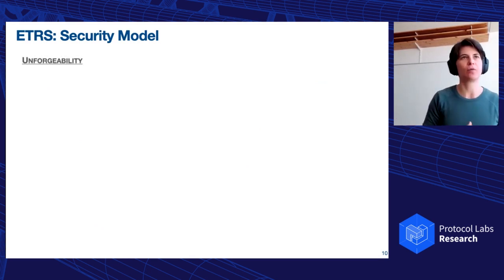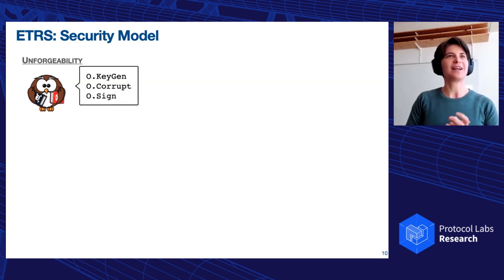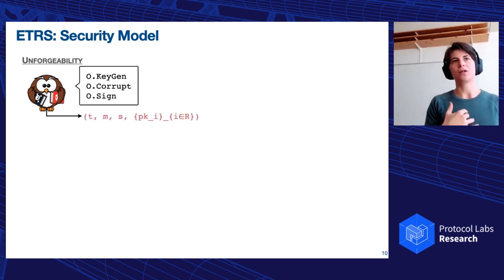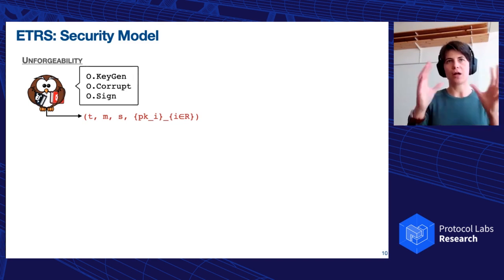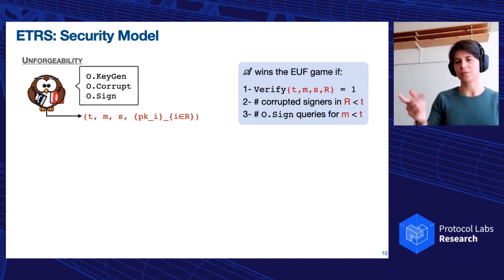So the security model. Before anonymity, we need to have unforgeability for a digital signature. This is not surprising as a notion. Our adversary here as an owl with bad hacking tools in their hand. They can interact with a key generation oracle, they can corrupt keys, and they can interact with a signing oracle. And the goal of the adversary is to output a tuple of a threshold, a message signature, and a ring of public keys. And he wins the existential forgeability game if this tuple output by the adversary verifies. So the verification algorithm returns one. And if the number of corrupted signers in the ring chosen by the adversary is less than t, because of course, if the adversary has corrupted more than t signers, then it can, of course, forge because it has t secret keys. Essentially for the same reason, but a bit more technicality here, we cannot let the adversary interact with a signing oracle for this specific message chosen for the unforgeability more than t times, because otherwise it could recycle those in.